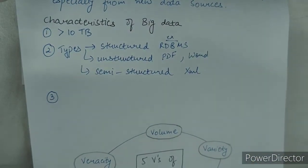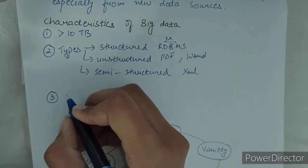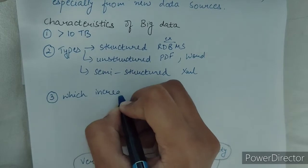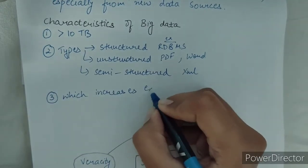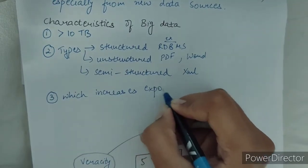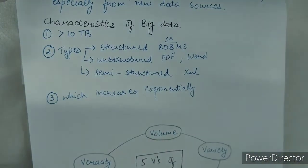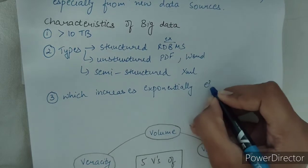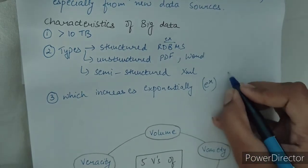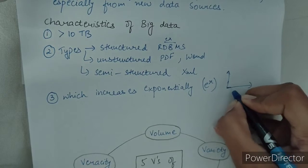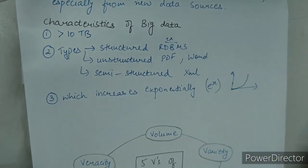The third characteristic is that big data increases exponentially. That means in terms of e to the power of x — the graph will become an exponential curve. So these are the three characteristics of big data.